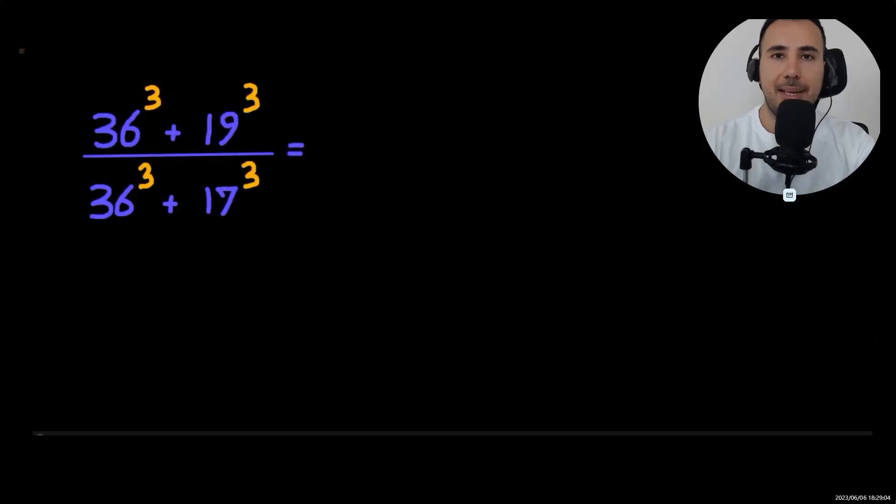Welcome to MathX. In this video we're going to do this mathematical Olympiad preparation question. As you see, each number is being cubed, so what makes this question special? What is the relationship between 17, 19, and 36?